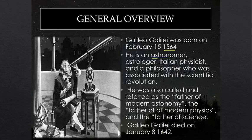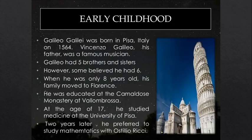One key point about Galileo Galilei is that he emphasized a lot on experimental observation and then formulating the theory corresponding to that. He was born in Pisa, Italy, and had a family consisting of five brothers and sisters. His father was a musician. He joined for medicine at the age of 17 at the University of Pisa, but later he preferred the study of mathematics.